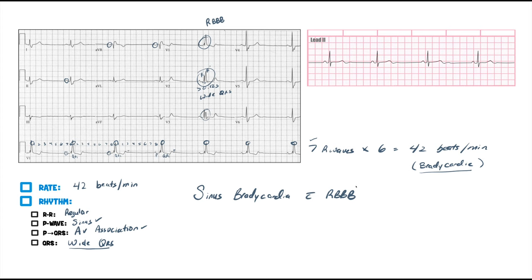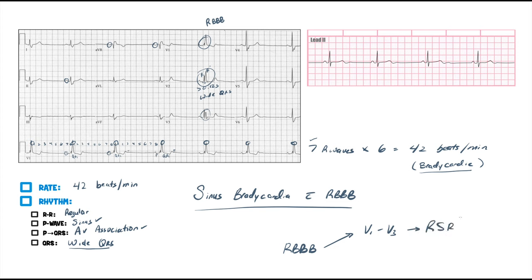Sometimes right bundle branch blocks can be not necessarily as ominous compared to left bundle branch blocks. But that's definitely what this EKG is. For right bundle branch block, what you're looking for very basically is V1 to V3 — you're looking for an RSR configuration. And then in V5 and V6, you're usually looking for a kind of a PVC-type pattern.